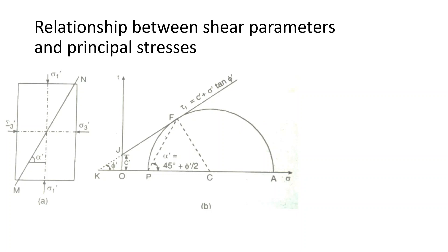We consider the Mohr circle and assume a critical condition — that is, the shear strength is at its maximum, equal to the critical failure condition. If the circle touches the failure envelope, that is the failure condition. The point where the envelope is tangent to the circle is perpendicular to the center of the circle.